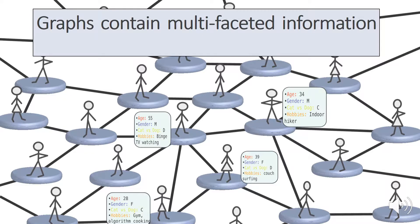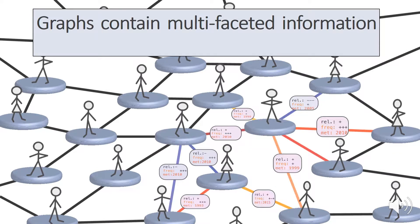This information typically comes under the form of node features capturing each node's characteristics or under the form of edge features, labels, or timestamps.